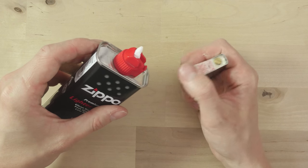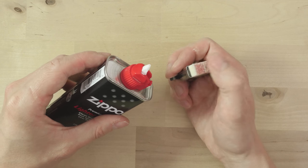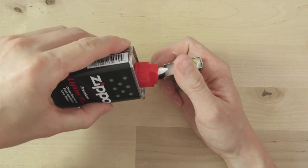All you do is lift up this felt and pour in the lighter fluid.